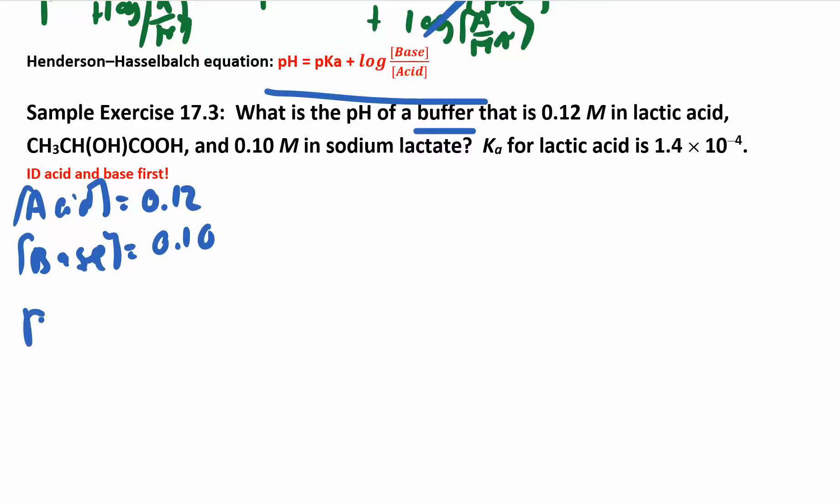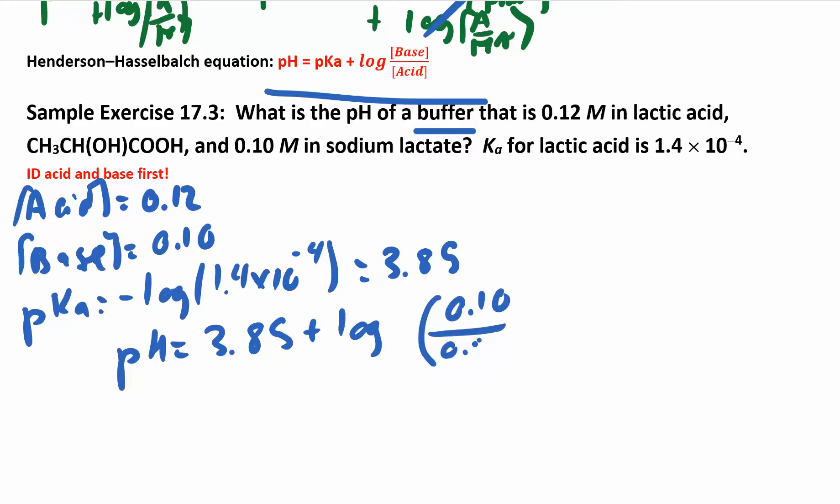And then they give us the Ka, so we want to find a pKa. pKa is just negative log of the Ka, 1.4 times 10 to the negative 4. And when you work that out, you get 3.85. And now you're ready to plug that into the Henderson-Hasselbalch equation. So you have pH equals the pKa plus the log of the base, always base over the acid. And so when you do this part, make sure you do it in baby steps. You get negative 0.08. So you have 3.85 plus a negative 0.08, so you end up with a pH that is 3.77.